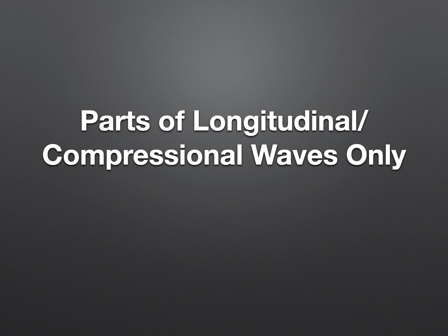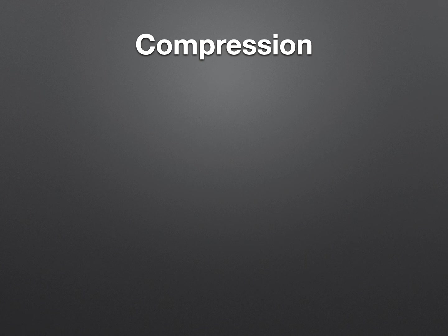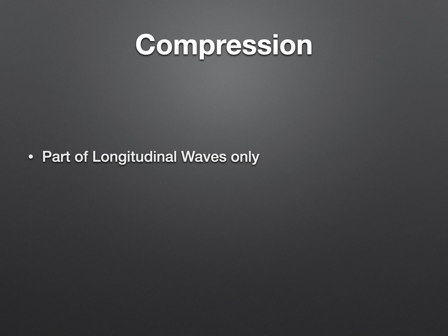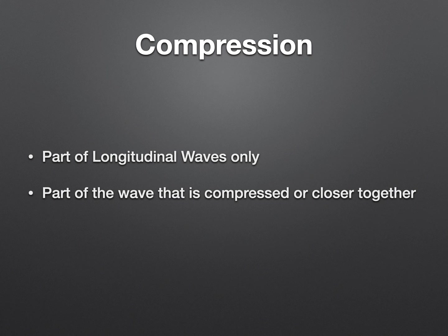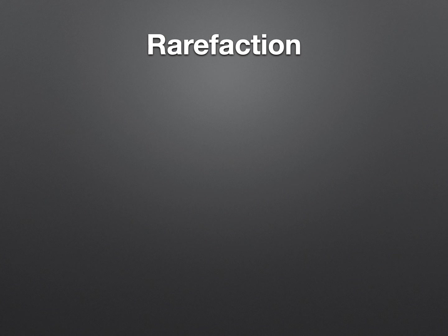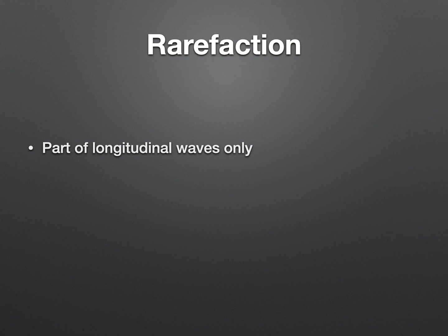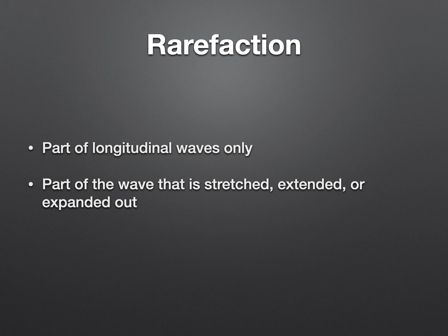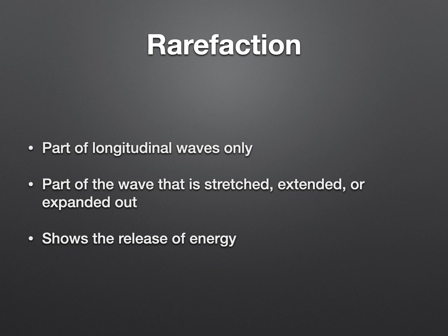There are two parts of a longitudinal wave — also known as a compressional wave — that only go with that type. The first is compression, which only belongs in these types of waves. That's where you can see the waves are compressed or closer together, and this is also related to amplitude in this type of wave movement. The other unique part is rarefaction — this is part of the longitudinal wave movement only. It's the part of the wave that is stretched, extended, or expanded out, showing the release of energy or amplitude. Those two things are only found in longitudinal waves.